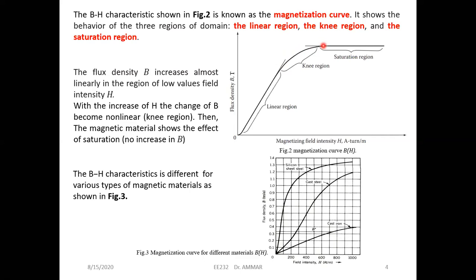At the end, when all the domains are aligned in one direction, the material gets saturated. Now B will not increase anymore whatever you increase H. The B-H characteristics can be divided into three regions: the linear region, the knee region, and the saturation region.